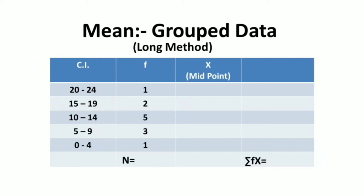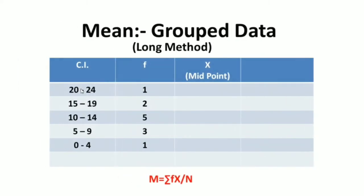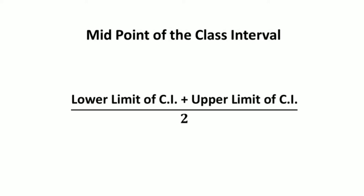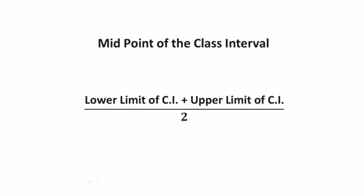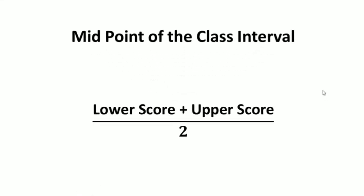The sum of frequencies is equal to 12, which means n equals 12. Then we find the midpoints of the class intervals. The formula to calculate the midpoint is: exact lower limit plus exact upper limit of the class interval divided by 2, or lower score plus upper score divided by 2.